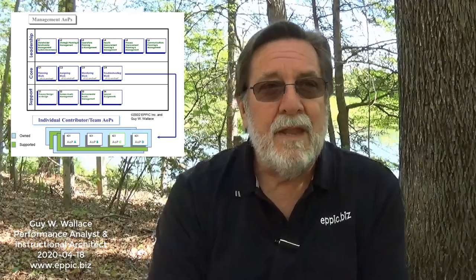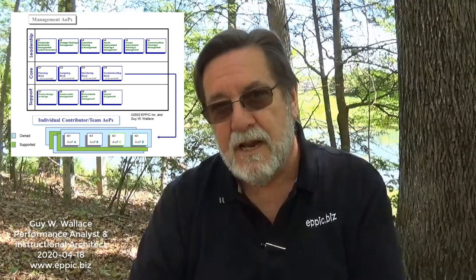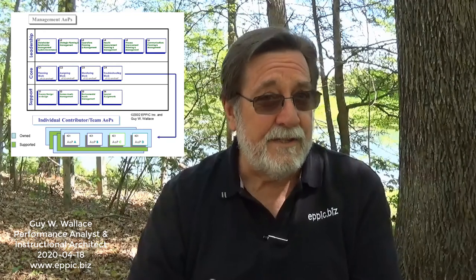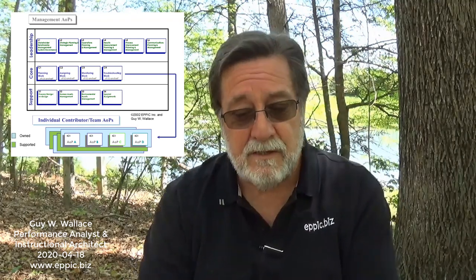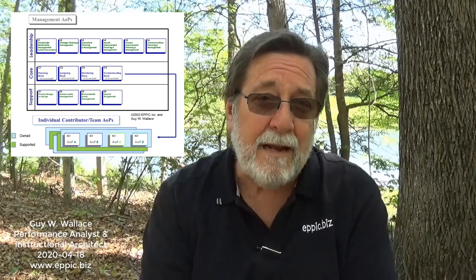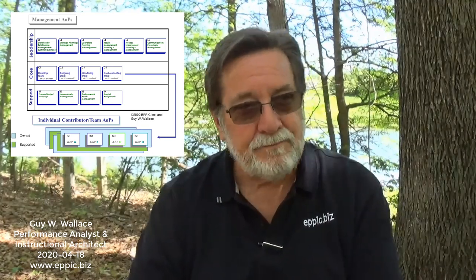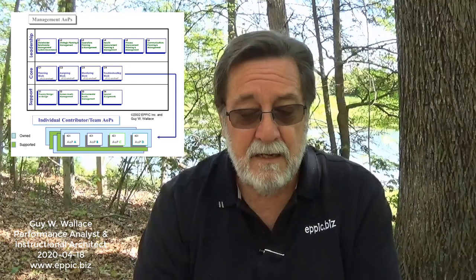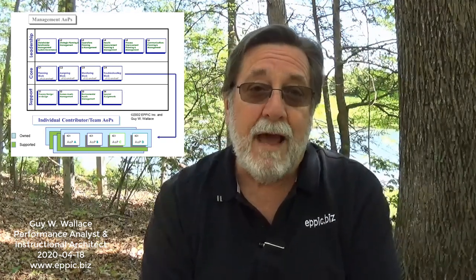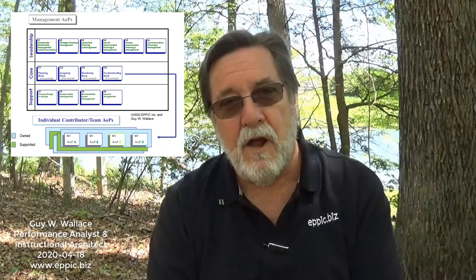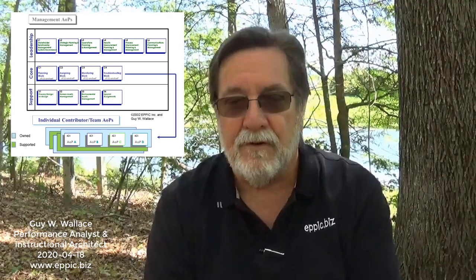That covers leadership. When you apply this model to your organizational entity, you look at what the key outputs and task sets are, the various roles and responsibilities needed to perform in those processes. The next level is core — from a managerial standpoint: planning the work, assigning the work, monitoring the work, and troubleshooting the work. No big mystery there. In the support tier, there's process design or redesign — perhaps creating a brand new process, or executing the improvement that came out of L5.